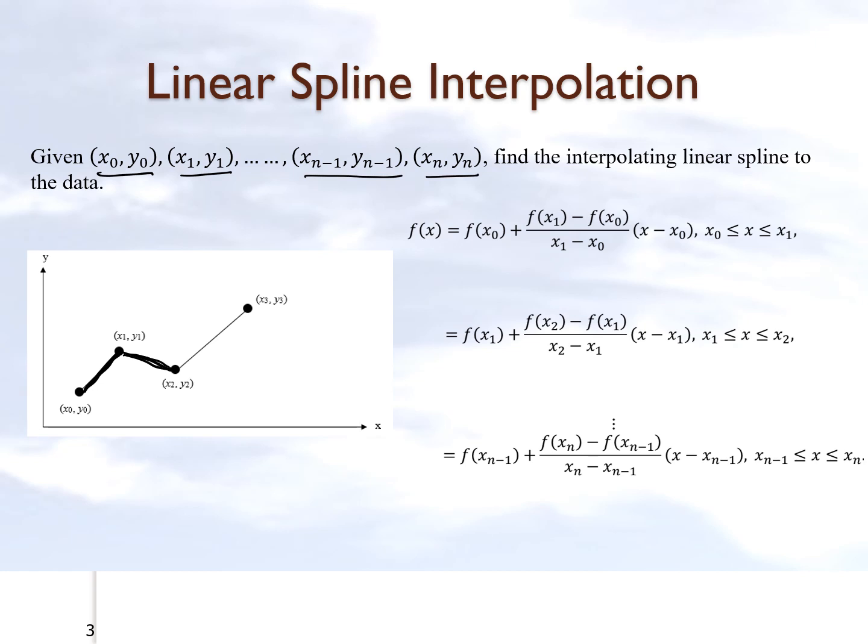Since we have n plus 1 data points, we'll have n such straight lines. We are using the Newton's divided difference polynomial format for our straight lines because it directly gives us the equation of a straight line. You can always start from y equals mx plus c.